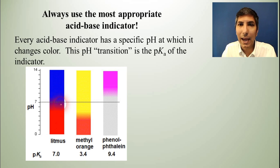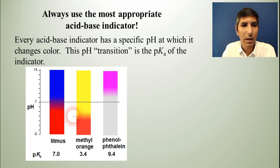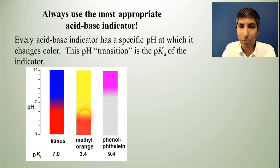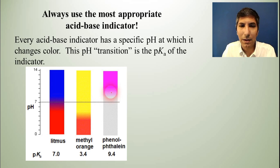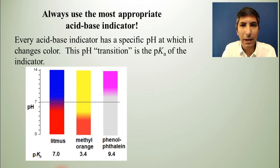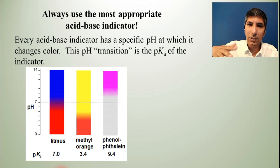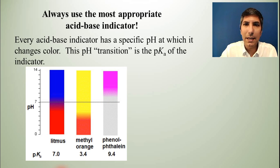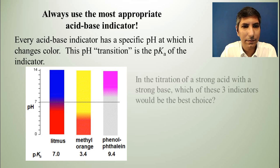Litmus has a pKa of 7.0. For methyl orange, it's about 3.4. For phenolphthalein, it's around 9.4. So that transition pH — that's the pKa.